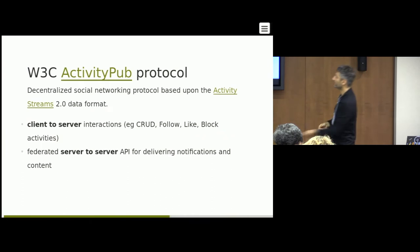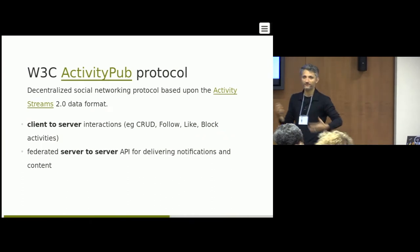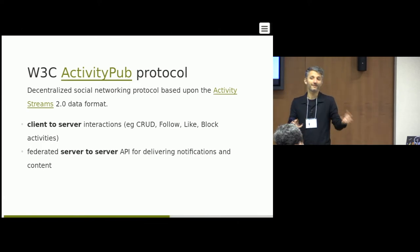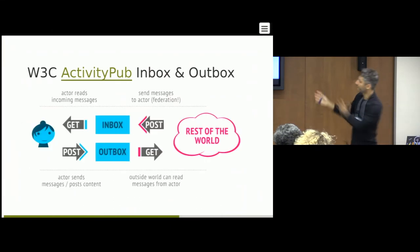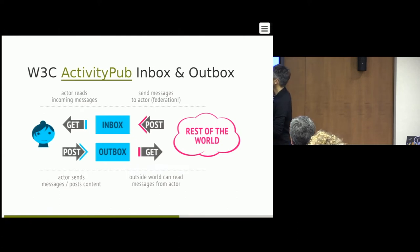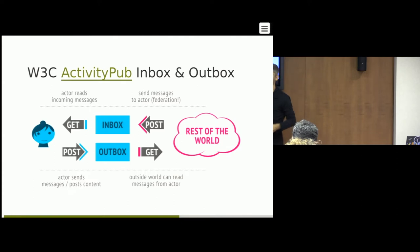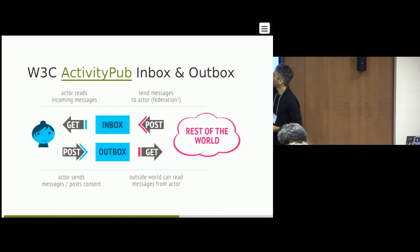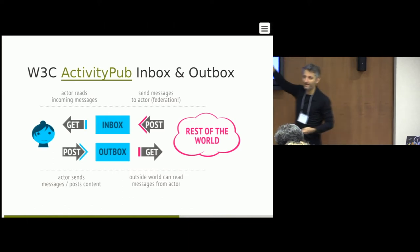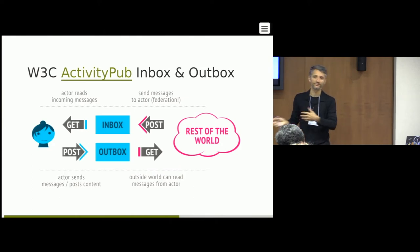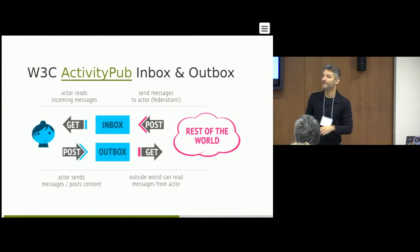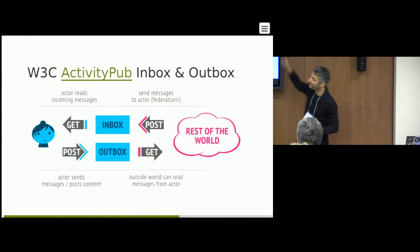ActivityPub is another protocol you should be aware of — it specifies how a client application can talk to a server, and how a server can talk to another server. A user posts an article to their outbox; whoever is subscribed or following them gets notified. There are different activities for creating, reading, deleting, liking, following, questioning, rejecting, and so on. The inbox of the ActivityPub protocol is based on Linked Data Notifications.